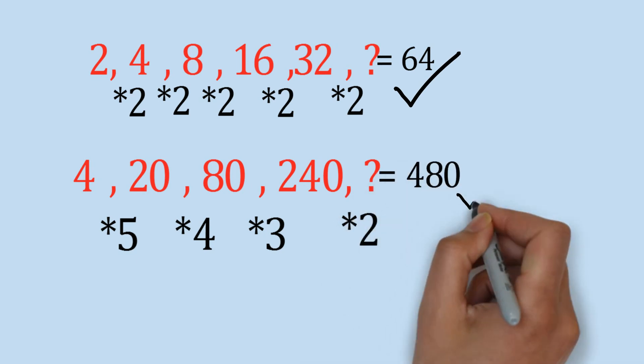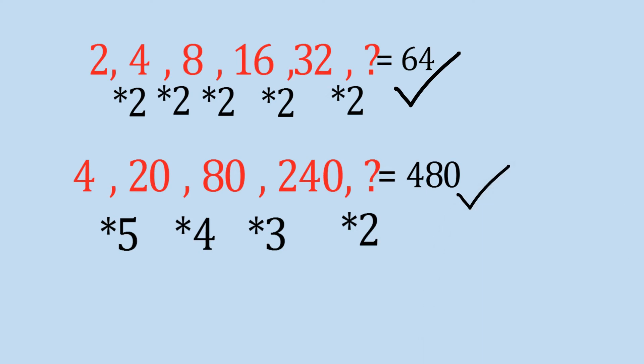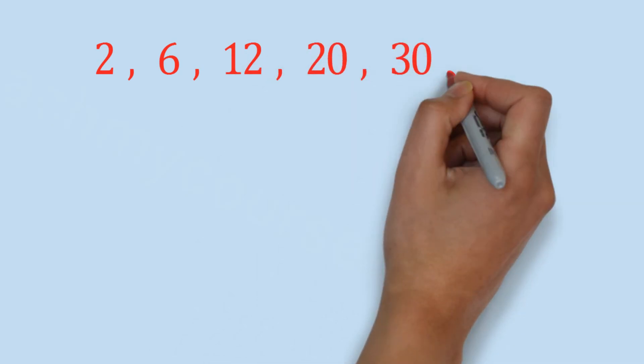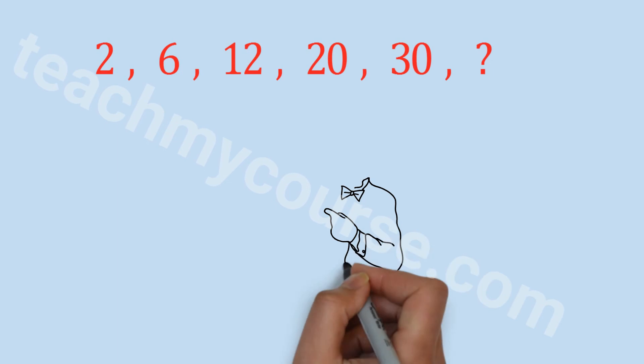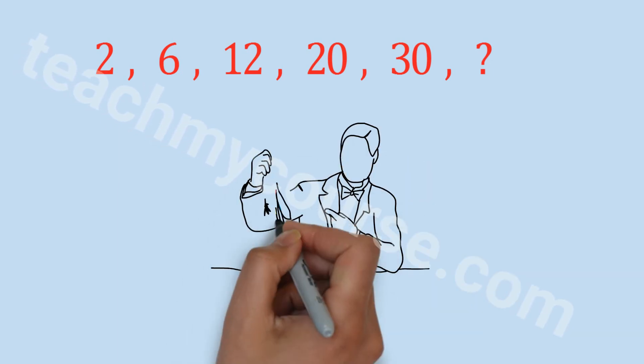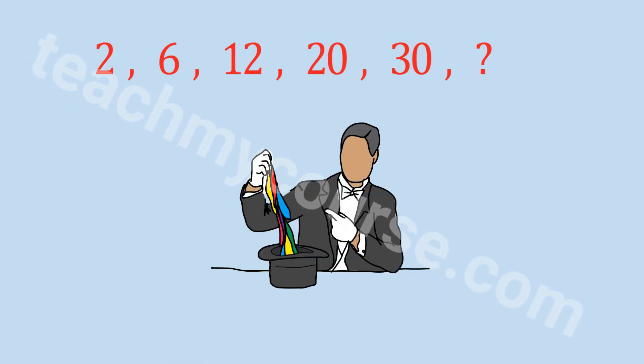Next we see 2, 6, 12, 20, and 30. If you see at the first glance, no clear pattern is being found here, right? But this is a case of product of 2 numbers. Let us see.